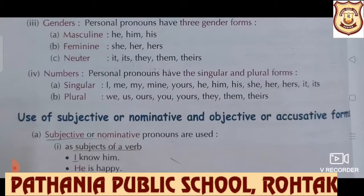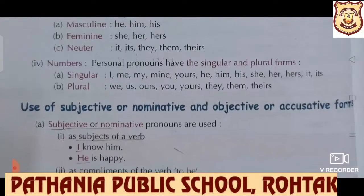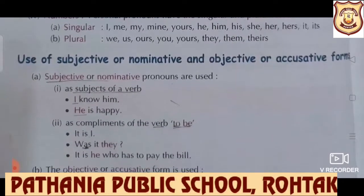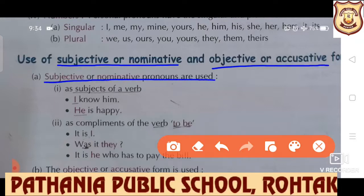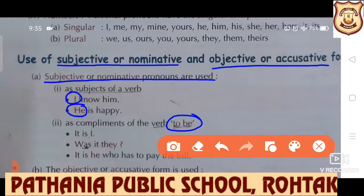Pronoun can be singular or plural. Now, what is the use of subjective or nominative? Subjective case is also called nominative, and objective case is also called accusative. Subjective or nominative pronouns are used as the subject of a verb — means the doer of the action. 'I know him. He is happy.' Sometimes, as a complement of the verb 'to be': 'It is I.' 'Was it they?' 'It is he who has to pay the bill.' These are used as complements.